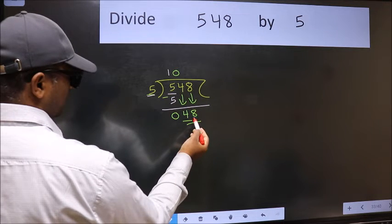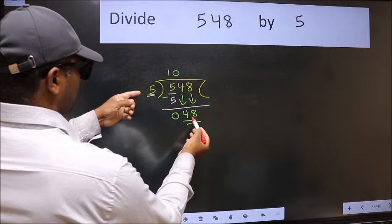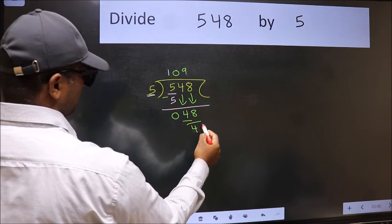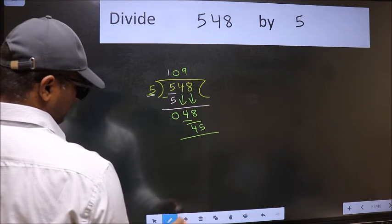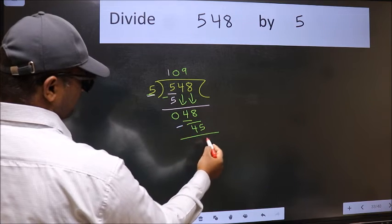Now 48. A number close to 48 in 5 table is 5 nines 45. Now we should subtract. We get 3.